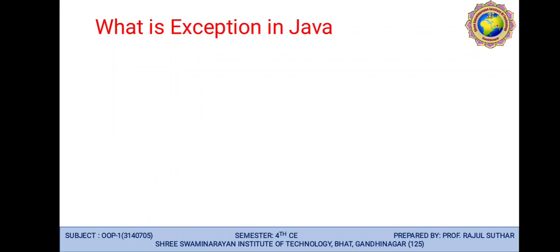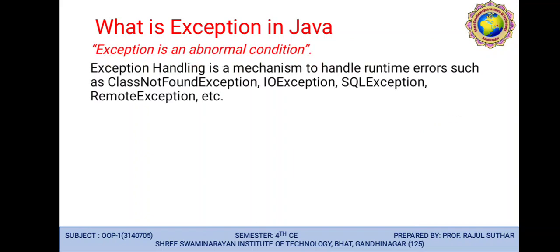What do you mean by exception in Java? We are all familiar with errors that are generated — for example, when we divide a number by zero, that is a mathematical error since no number can be divided by zero. Whenever some disturbance in a program occurs and the program cannot be stopped, continuous execution will be performed. Exception is an abnormal condition, and exception handling is a mechanism to handle such errors.